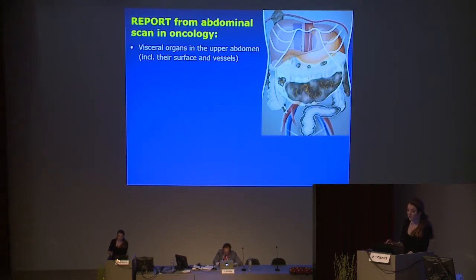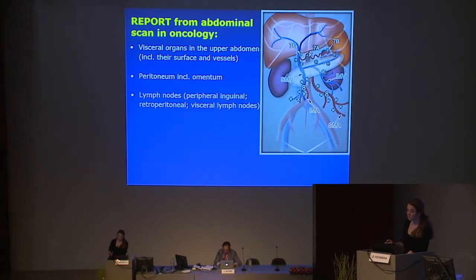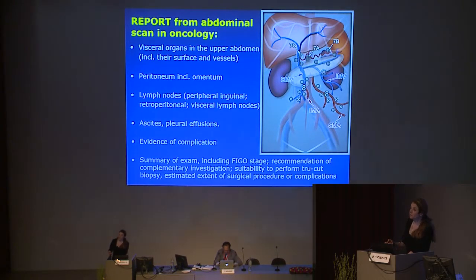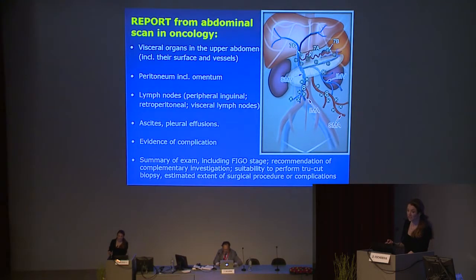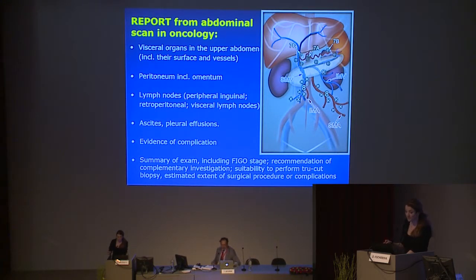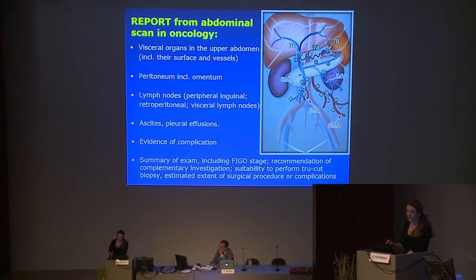The report from the transabdominal scan should be systematic, including infiltration of visceral organs, peritoneum, lymph nodes, presence of ascites and pleural effusion, evidence of complications, and a summary. In the summary, as an ultrasound specialist we should not only summarize the examination including FIGO staging — we should also recommend additional techniques where we have limitations, such as MRI or colonoscopy. Additional imaging is recommended by ultrasound experts, not by gynae-oncologists. We also write about the estimated probability and whether TruCAD biopsy is possible to perform.